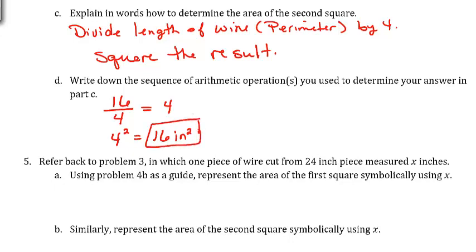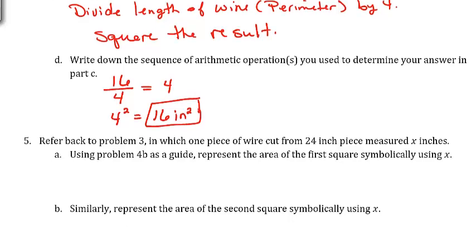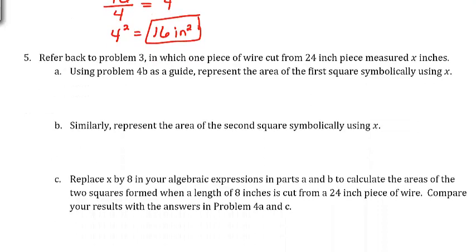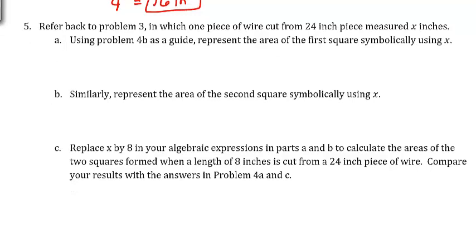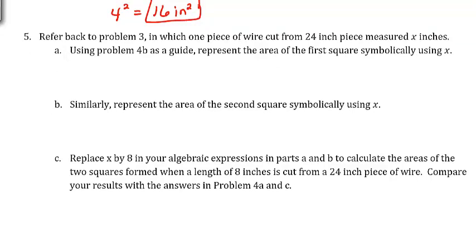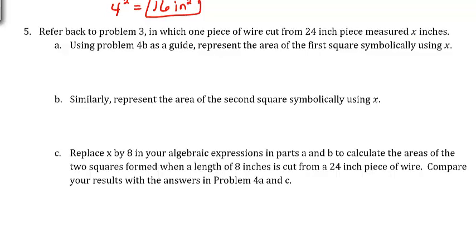It's a little bit weird because the perimeter and the area are the same — that's not typical. But now referring back to problem 3, where one piece measured X inches, we represent the area of the first square symbolically using X. The first piece has a length of X, we divide that by 4, and then square that result: it's X divided by 4, squared — (X/4)².